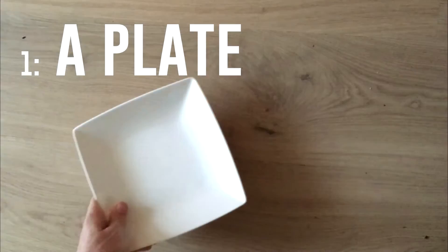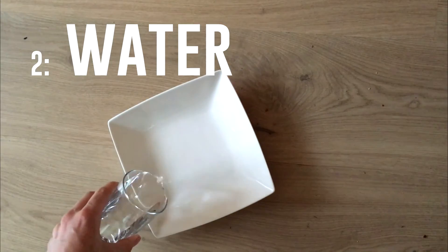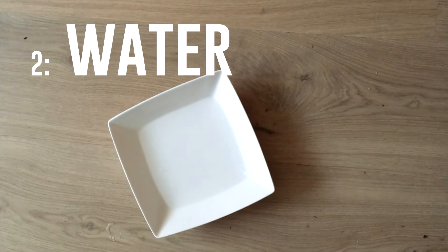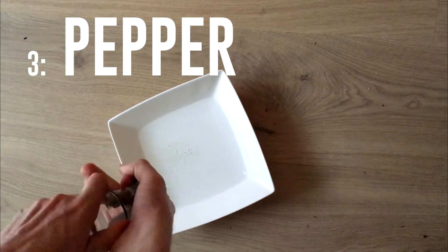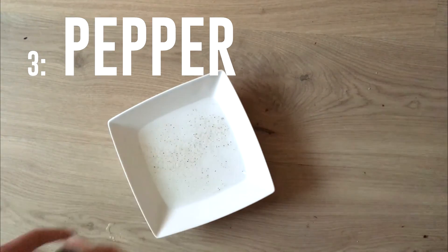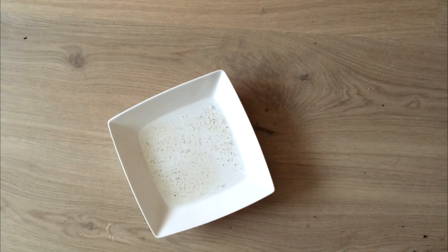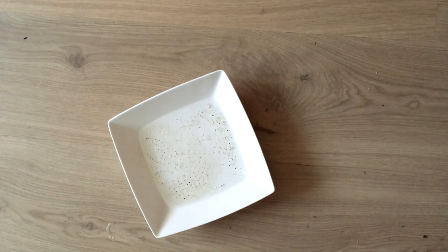First we take a plate and we fill it with some ordinary water. Next, we spread some freshly ground pepper on top of the water. The pepper doesn't dissolve and it repels water, so it floats on top of the water's surface.